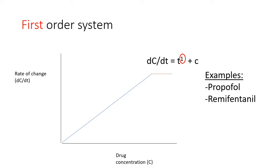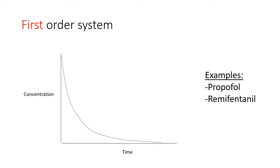Examples of this are propofol and remifentanyl, which, as we all know, are rapidly eliminated drugs. The concentration versus time curve associated with first-order elimination kinetics is, in fact, the natural exponential decay curve with which we are all now familiar.